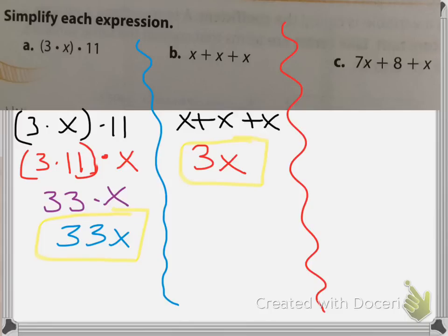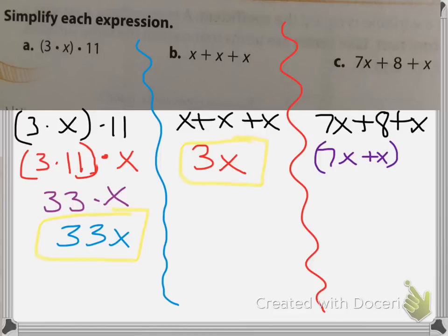Now let's take a look at C. For C, you have 7x plus 8 plus x. Remember, they don't want you to have any like terms. So in order to get rid of those like terms, the first thing you want to do is combine 7x and the x. So 7x plus x plus 8. Then in our next step, 7x plus x gives you 8x plus 8. And you can't combine 8x plus 8, just like I told you in the last video, because 8x has that x — making it an apple — and the 8 is just an orange. So these are the three answers you should have for A, B, and C.